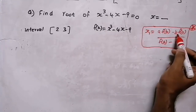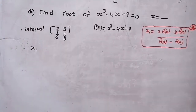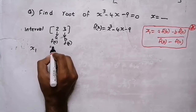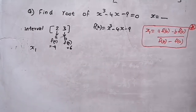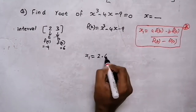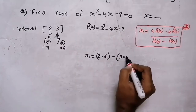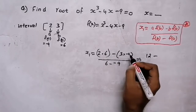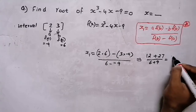Now we are going to find x1. We already know a = 2, b = 3, f(a) = −9, and f(b) = 6. Substituting: x1 = [2 × 6 − 3 × (−9)] / [6 − (−9)] = [12 + 27] / 15 = 2.6.